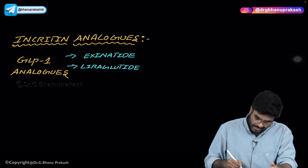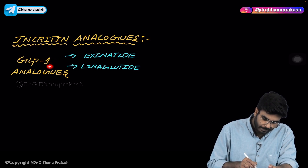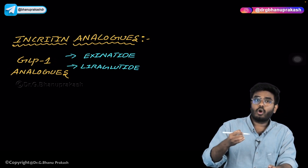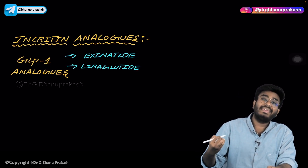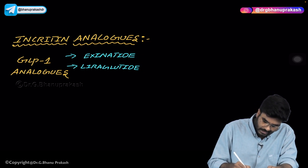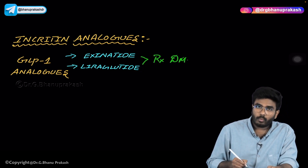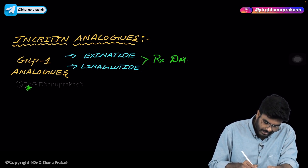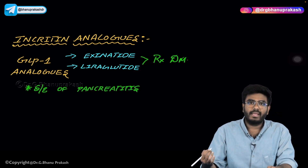The drugs that are like incretins are called incretin analogues. GLP-1 analogues are very famous — glucagon-like peptide-1 is an incretin, and analog means drug-like. GLP-1 analogues are exenatide and liraglutide, and these drugs are used in the treatment of diabetes mellitus. One important point: these incretin analogues have a side effect of pancreatitis.